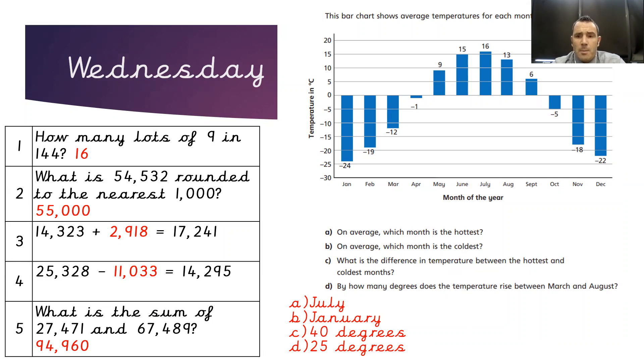To look at how many degrees the temperature rises between March and August, we'd need to look at the values for those two months. So we have minus 12 and plus 13. So March being minus 12, again, we'd need to bridge through zero. So we'd need to add 12 to get to our zero, and then we've got 13 more on top of that, which gives us our total of 25.